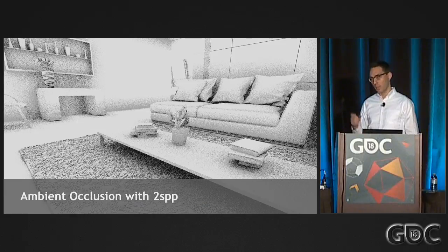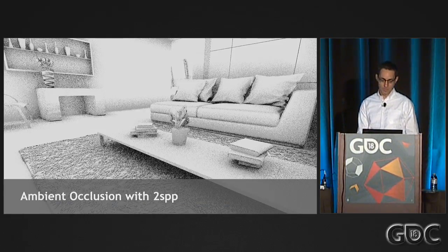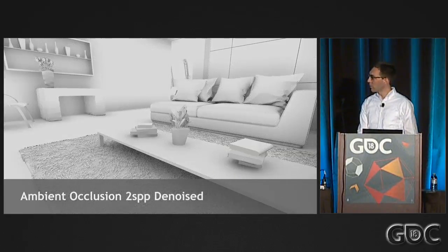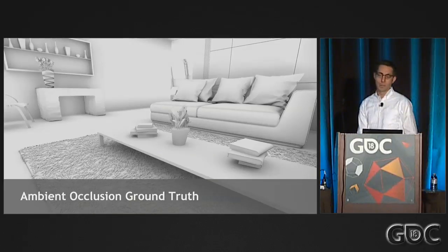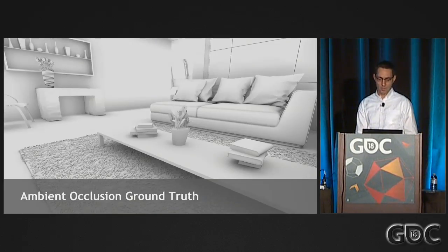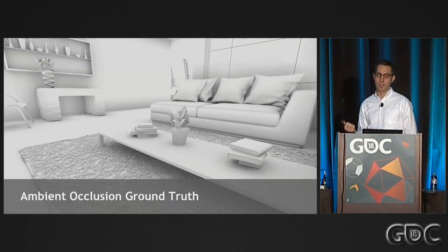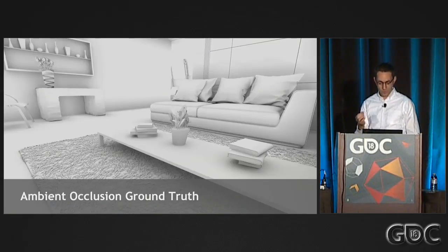These rays are cheap to trace because they're both shorter and you don't do any expensive shading at the hit points. Here's an example: two samples per pixel and then a fairly standard denoising filter, some kind of bilateral filter. Comparing that to the ground truth, it's not exactly the same, but it's a lot closer than screen-space occlusion algorithms. You can also imagine doing a hybrid where you take samples from screen space and augment those with rays to produce a result that is very, very close to ground truth.